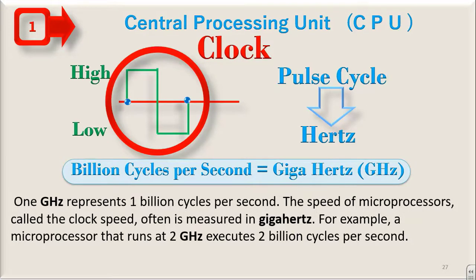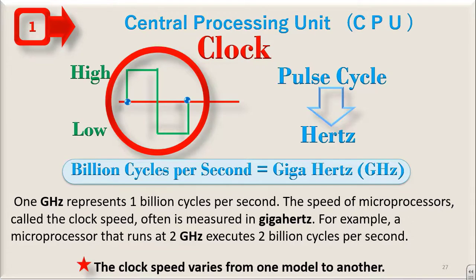1 GHz represents 1 billion cycles per second. The speed of microprocessor called the clock speed often is measured in GHz. For example, a microprocessor that runs at 2 GHz executes 2 billion cycles per second. The clock speed varies from one model of CPU to another model of CPU.